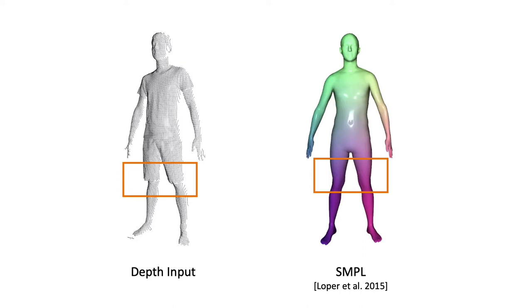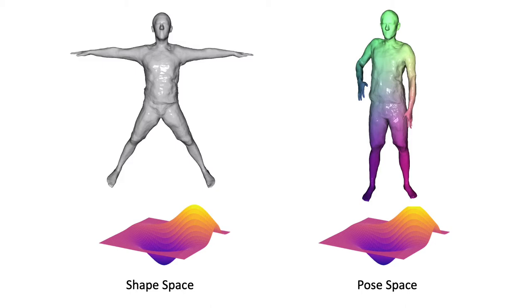To solve these, we propose Neural Parametric Models, or NPMs, a learned approach to disentangle 4D dynamics into latent space representations of shape and pose.